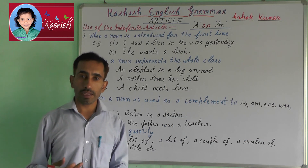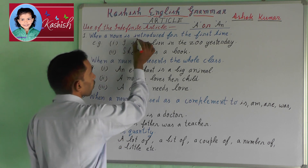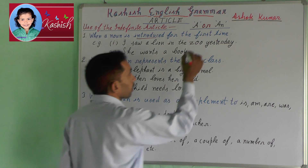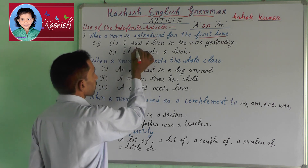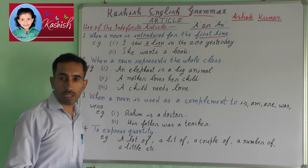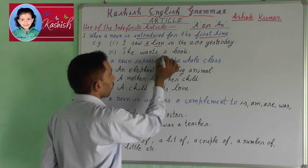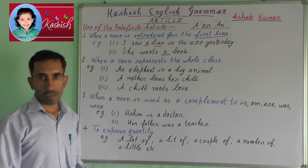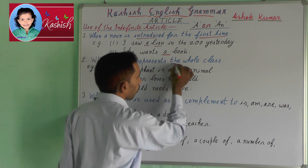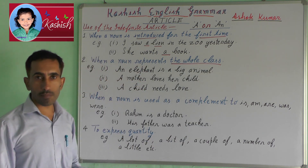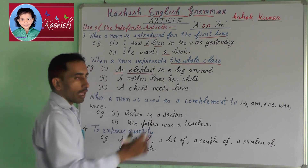Use of the indefinite article. First, when a noun is introduced for the first time. For example: I saw a lion in the zoo yesterday. She wants a book. Second, when a noun represents the whole class. For example: an elephant is a big animal.